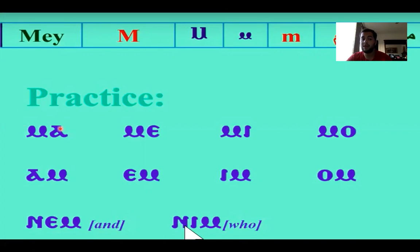So ME alpha, MA. ME epsilon, ME. ME iota, MI. ME o, MO. And then if you flip it and put the vowel before the consonant, you have AM, EM, IM, and OM.